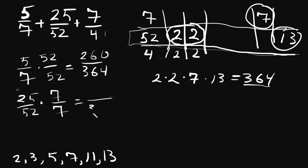What's missing is the 7. So we're going to multiply this one by 7/7. And this is going to give you, 52 times 7 will give you 364 in the denominator. And 25 times 7 is 175.